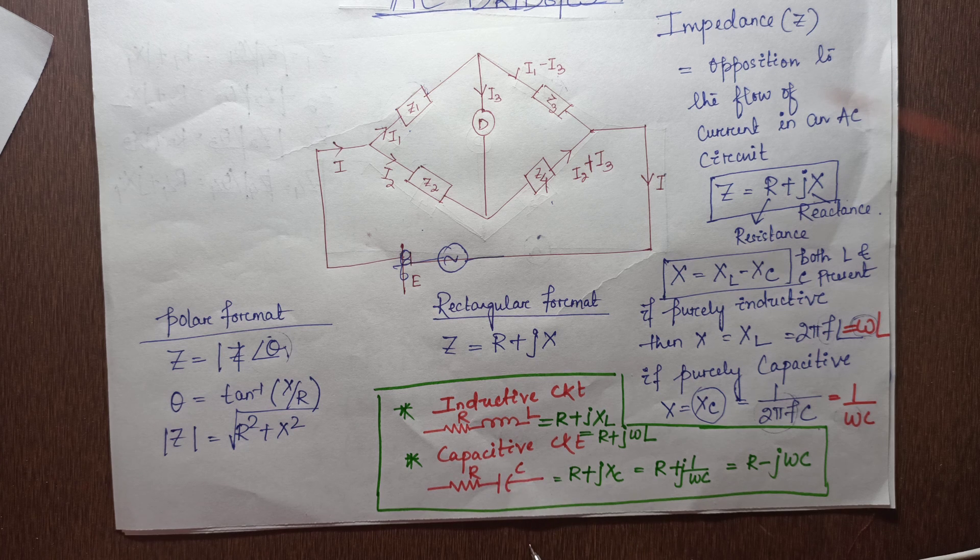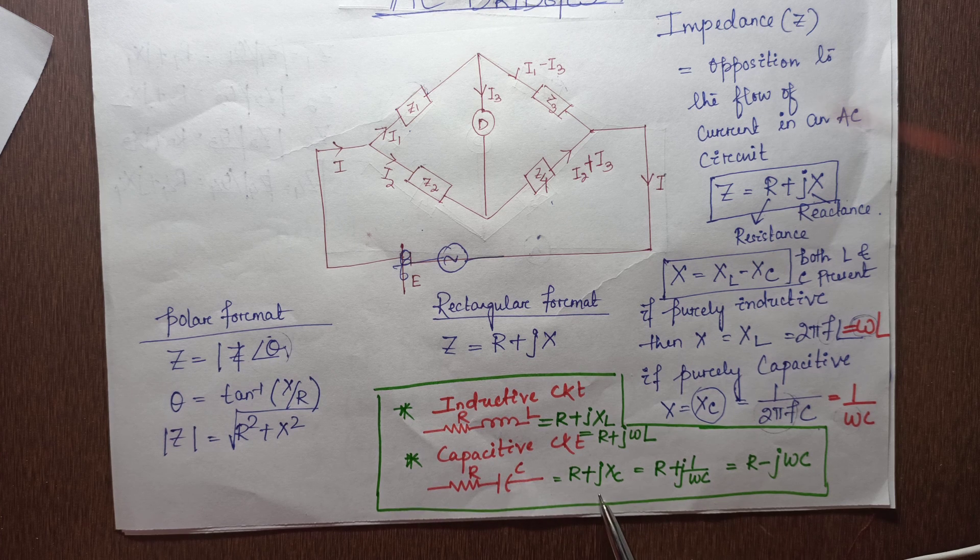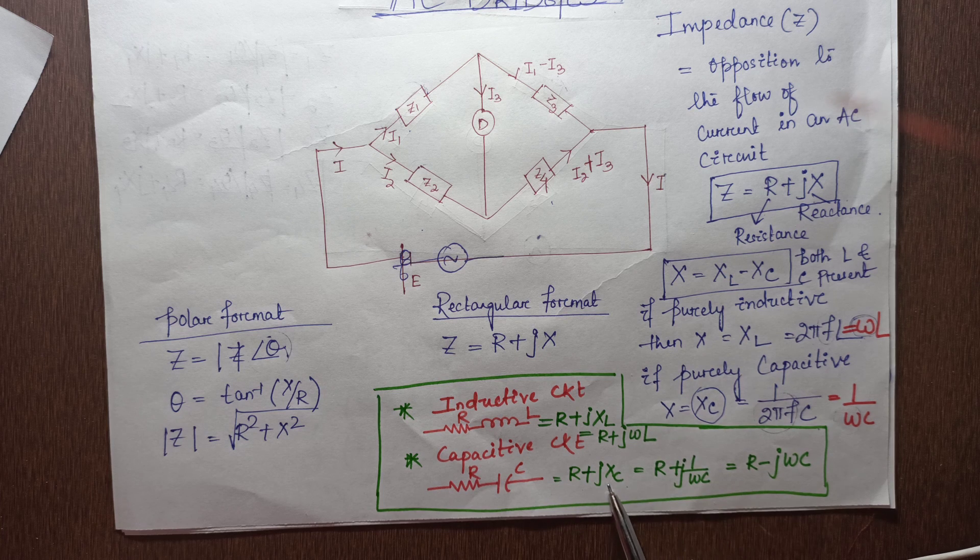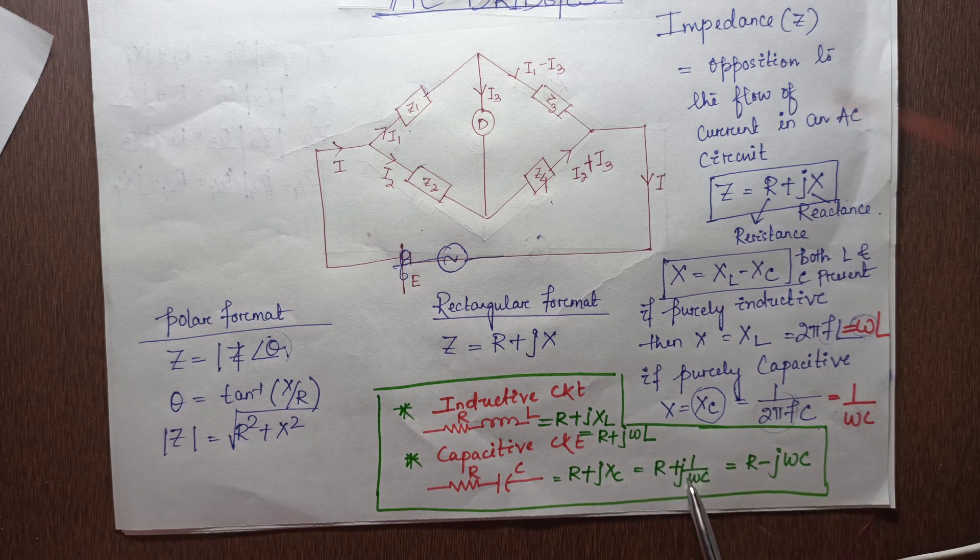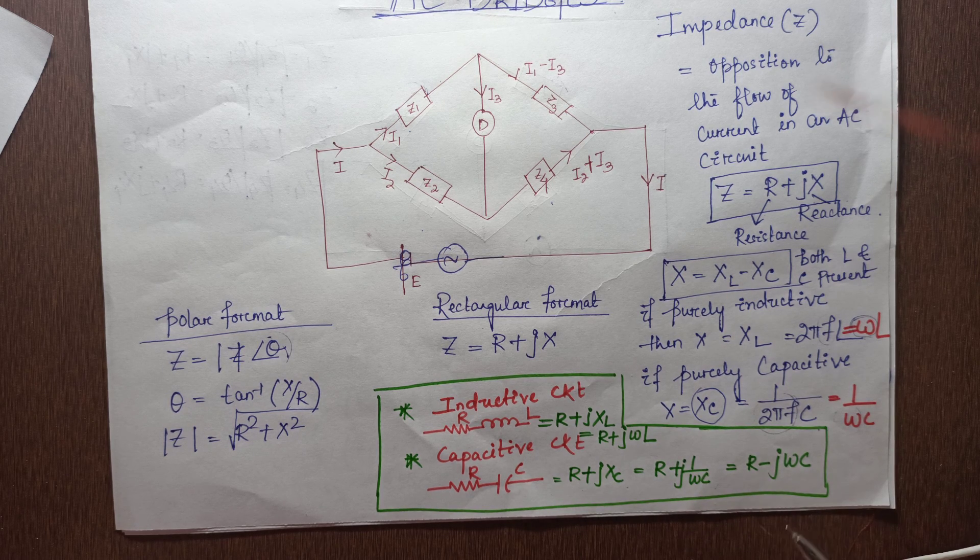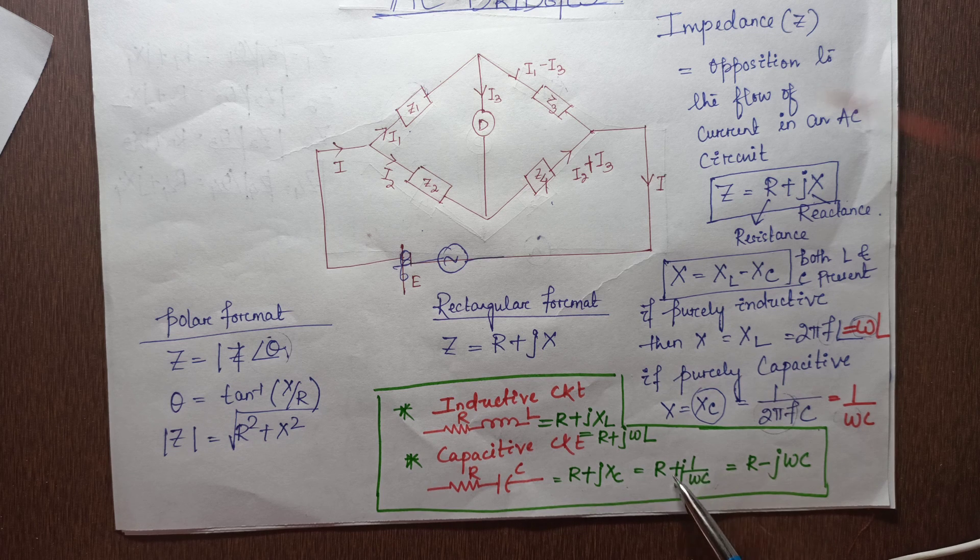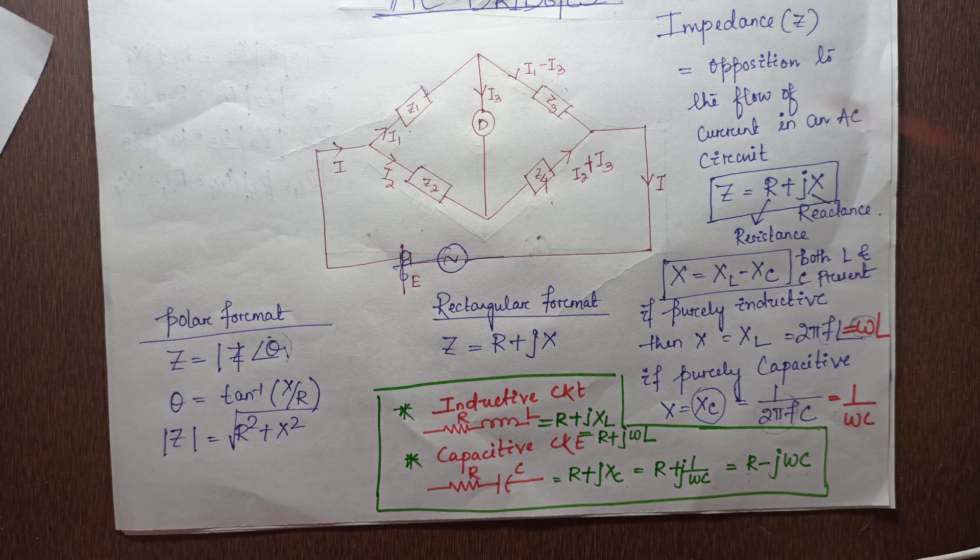Now when it is a capacitive circuit consisting of resistance and capacitance, it is represented as R + jXC, where XC = 1/(ωC). When we bring it to reciprocal form, this becomes R - jωC.